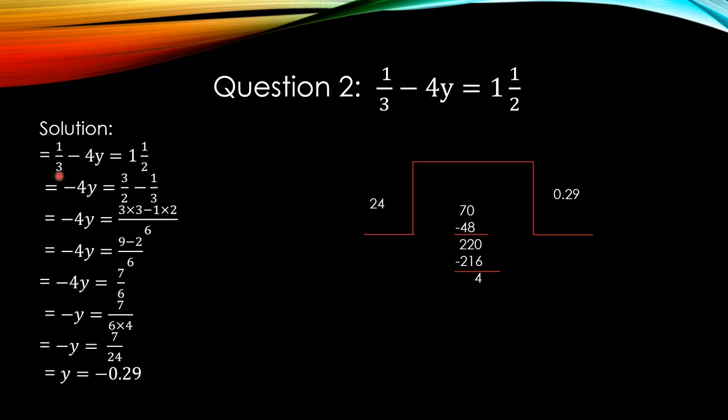On the left hand side, there is plus 1 upon 3. There is no sign, we will consider plus. When we shift 1 upon 3 to the right hand side, we get minus 1 upon 3. 3 upon 2 minus 1 upon 3. These are fractions. How can you solve the fractions? Denominators are 2, 3. The LCM of 2 and 3 is 6. Consider 2. 2 is denominator of the first fraction. Now, search 6 in the table of 2. 2, 3 is 6. 3 multiply the numerator, which is 3. 3 into 3 is 9.